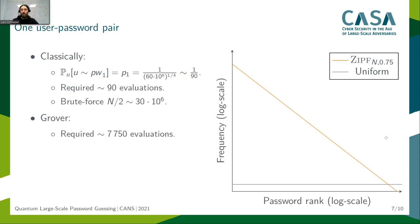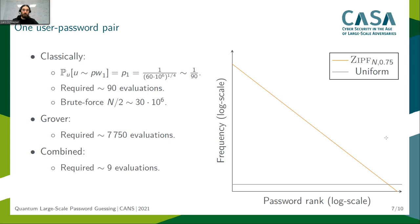In our paper, we looked into a combination attack of both techniques. If we combine Grover's algorithm with knowledge about the distribution and search for a user with password rank 1, we can further decrease the number of needed hash evaluations to nearly the 8th root of n — or in our case, roughly 9 evaluations. To make this more comparable: assuming 100 million passwords, brute force requires an average 50 million evaluations; Grover alone requires square root of n, which is 10,000 evaluations; the classical distribution-aware attack requires 4th root of n, or 100 evaluations; and our combined attack requires only 8th root of n, or 10 evaluations.